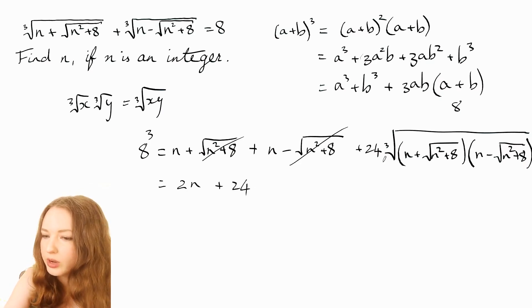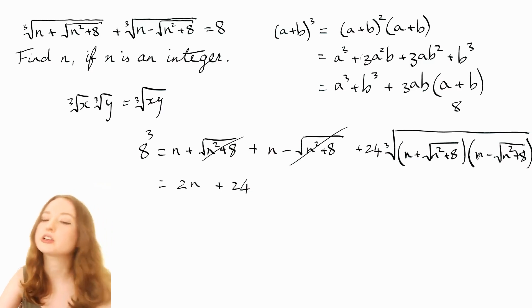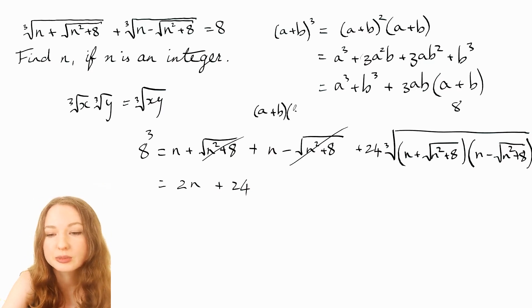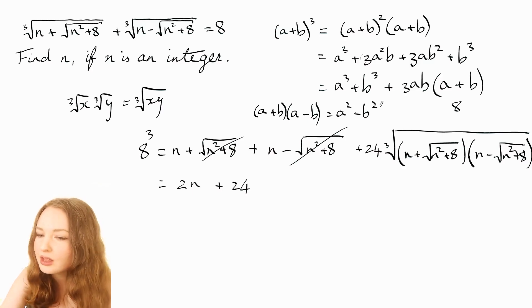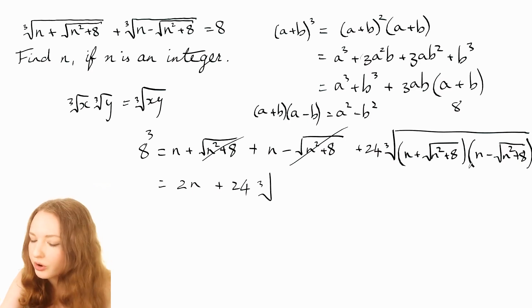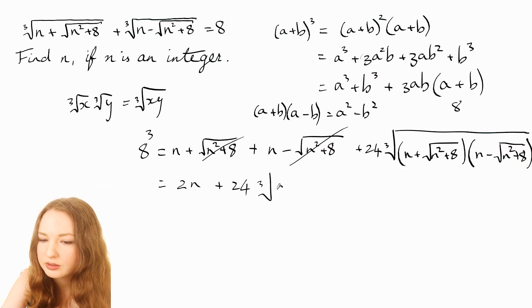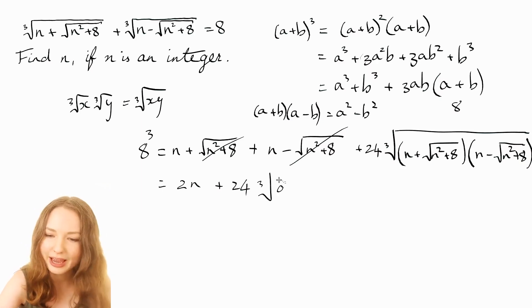Now with this bit we've actually got difference of two squares there, so you know how when you've got something like (a+b)(a-b) and you expand that you get a² - b² that's difference of two squares.